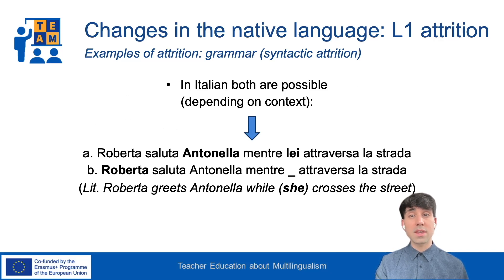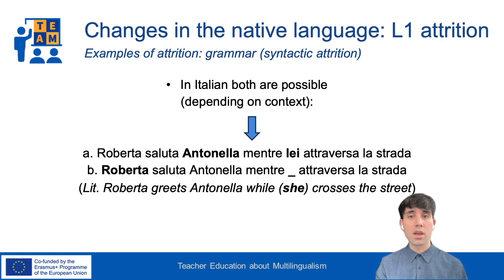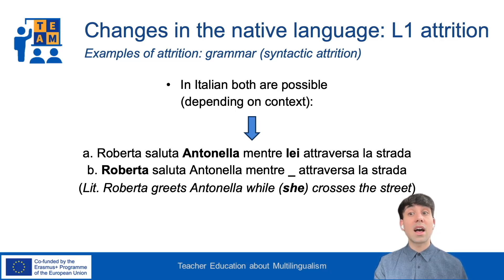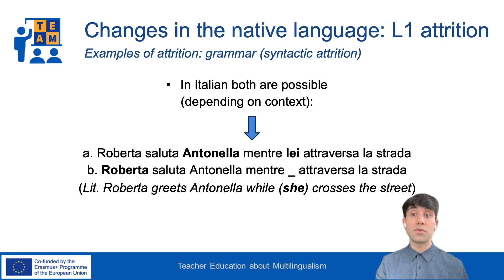While both sentences may seem similar — 'Roberta greets Antonella when she crosses the street' — the meaning relies on the presence or absence of the pronoun. Specifically, 'lei' (she) in sentence A is usually interpreted by Italian monolinguals as referring to the second person mentioned, that is, Antonella — meaning it is Antonella who is crossing the street — or alternatively, a third unmentioned individual. In sentence B, it is Roberta who is crossing the street, due to the absence of the pronoun, which is permitted in Italian.